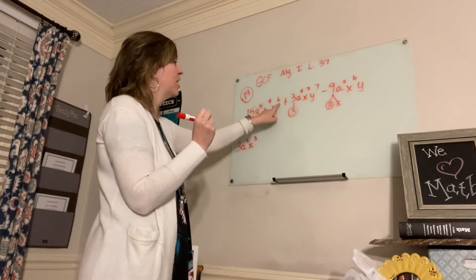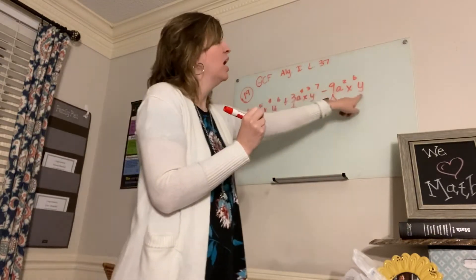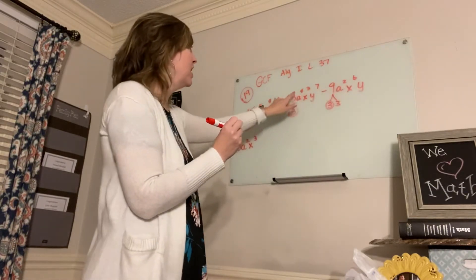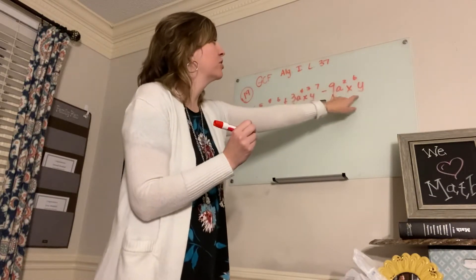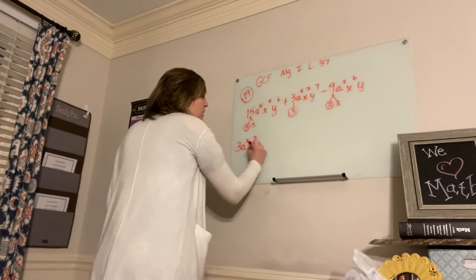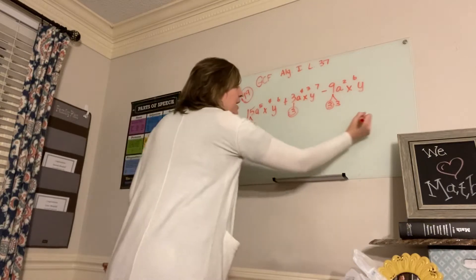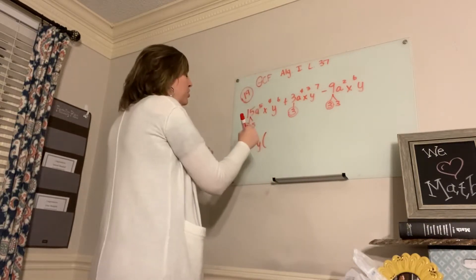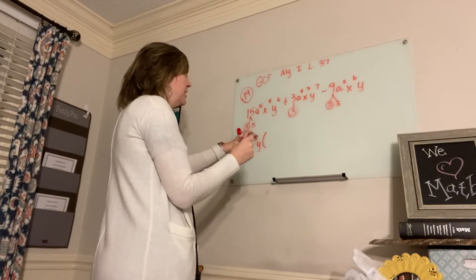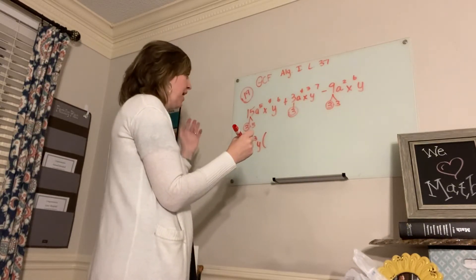Now let's look at Y's. I've got 6, I've got 7 — wow, that's a lot — but I only have one Y there. So even though I've got 6 and 7, there's only one Y in common, so I can only write one Y. Now, what do I do? I show the remainder of what's left. I'm taking out the GCF and then showing what's left — that's how I'm factoring.